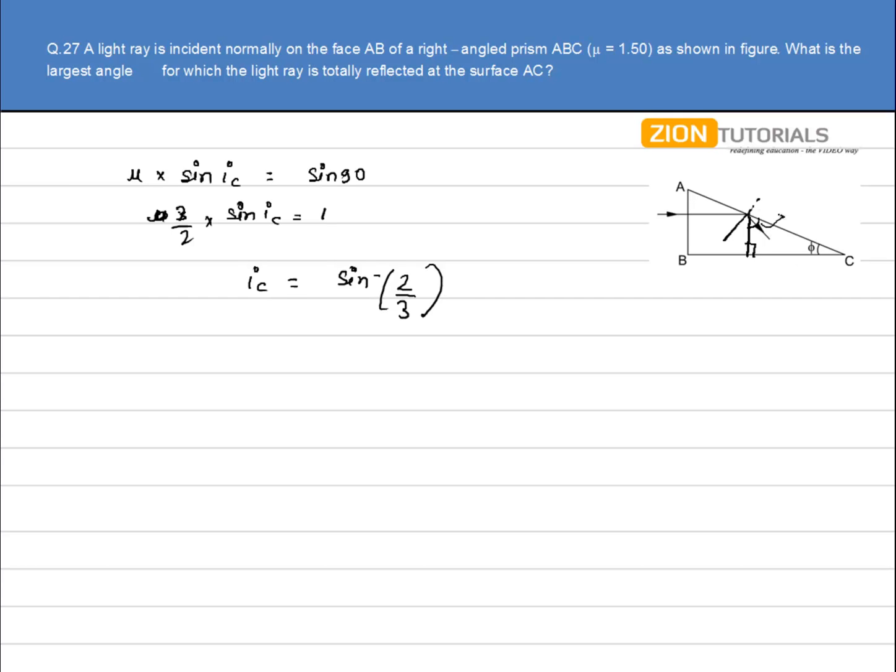This angle will be 90 minus phi. So this angle will be phi. Therefore, this angle is 90 minus phi. It's simple geometry, nothing more.